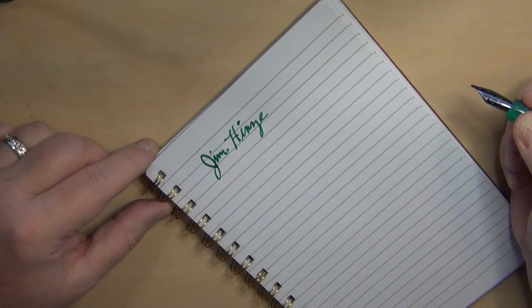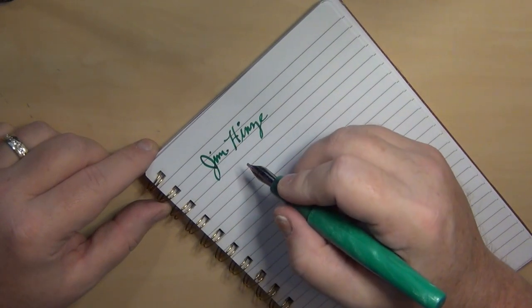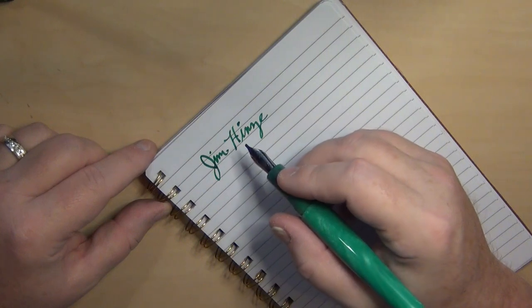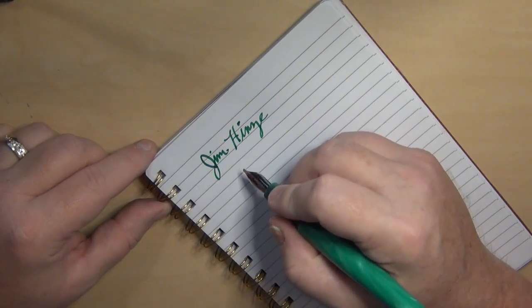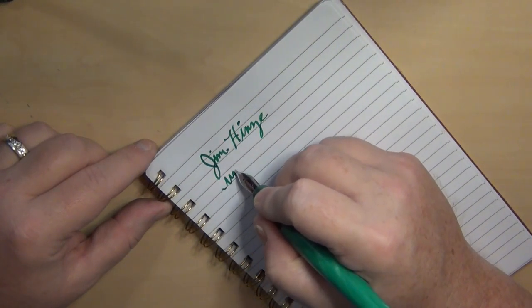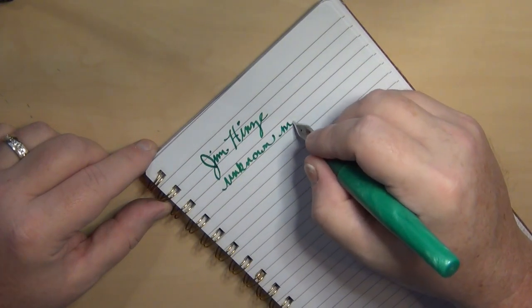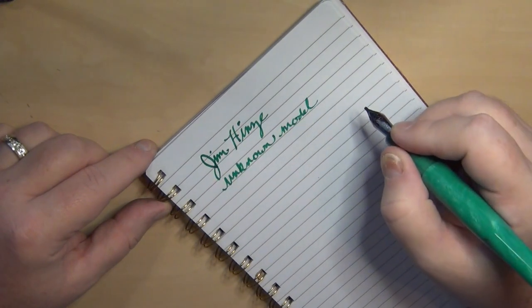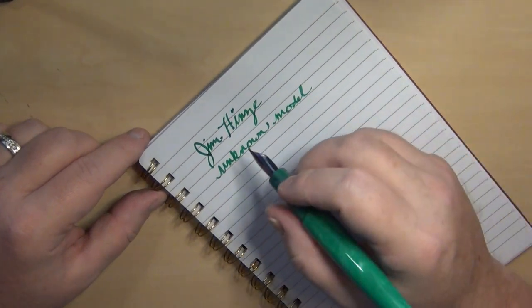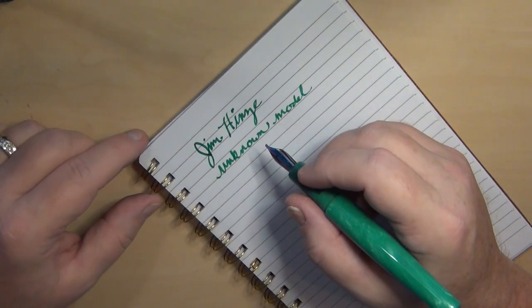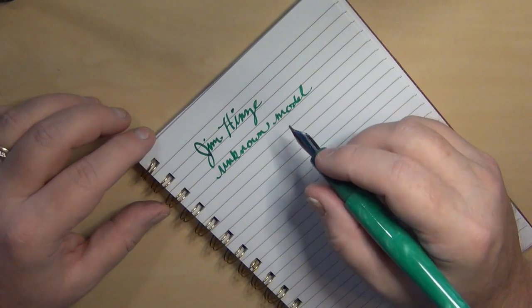Let's go ahead and put nib to paper. You can see that's a pretty broad writing. But for a stub nib, it actually writes pretty well and pretty smoothly. So this is an unknown model.